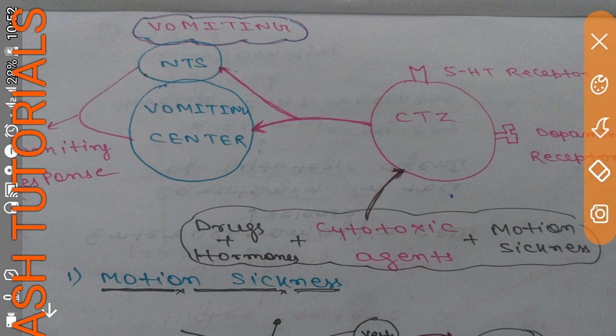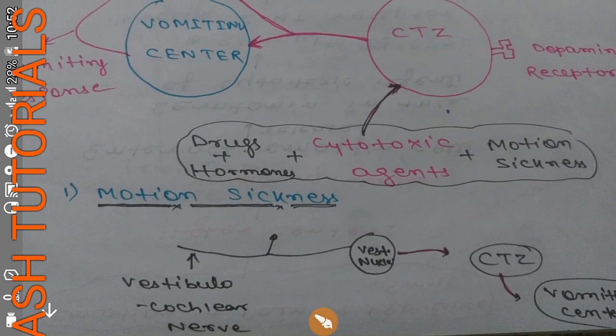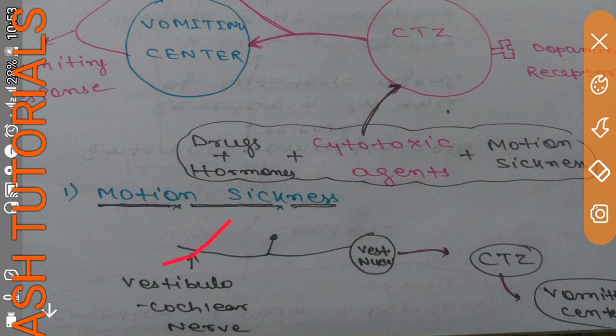On the chemoreceptor trigger zone, there are two types of receptors: 5-HT receptors and dopamine receptors. Now, coming to motion sickness — in motion sickness, the vestibular branch of the vestibulocochlear nerve is stimulated, which takes the impulse to the vestibular nucleus.